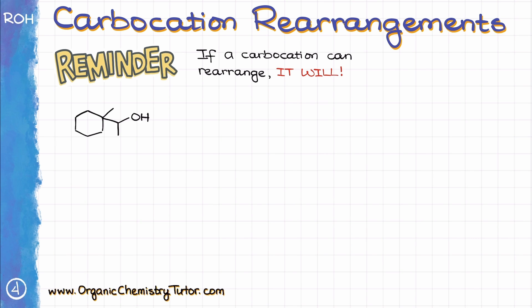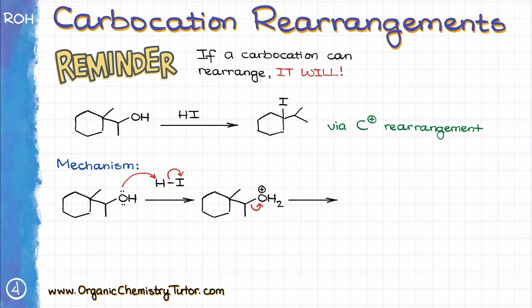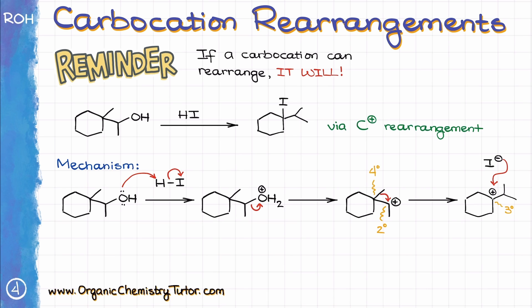So if I take this secondary alcohol over here and react it with HI, I will end up with the rearranged product, and my iodine will be on a different atom from where the OH group used to be. Let's look at the mechanism. First, we protonate the OH group, making it into a good leaving group. Then we'll have leaving group dissociation, yielding a corresponding carbocation. Now, this carbocation is secondary and it's right next to a quaternary carbon, which means we can perform an alkyl shift and make a more stable carbocation. The methyl shift here makes a new tertiary carbocation. Since my carbocation is as stable as it can be in this case, I will proceed with the nucleophilic attack, and once the iodine attacks the carbocation, we'll end up with the final rearranged product. I do have a whole tutorial on carbocation rearrangements, so if you need a refresher, I'll leave the link in the description below.